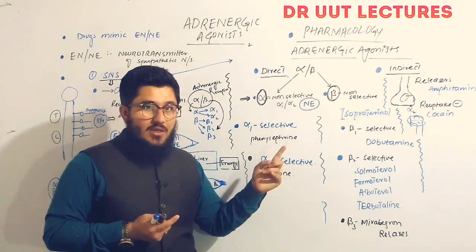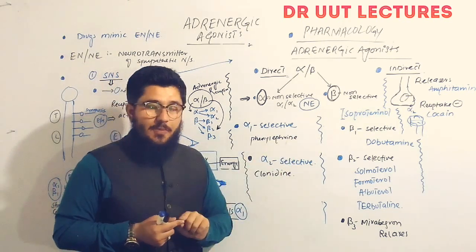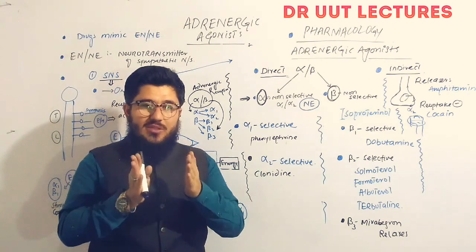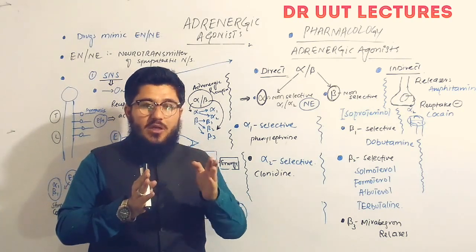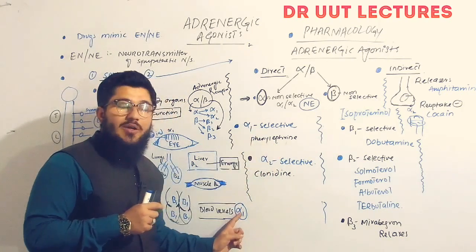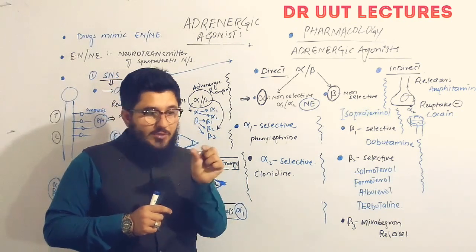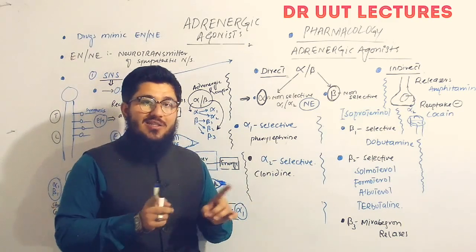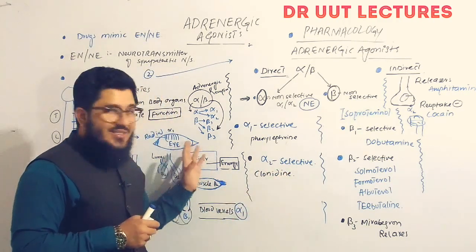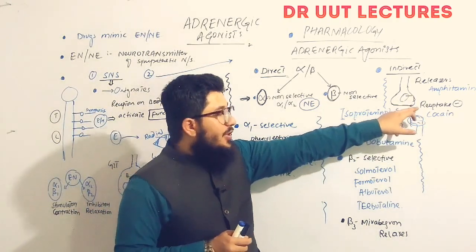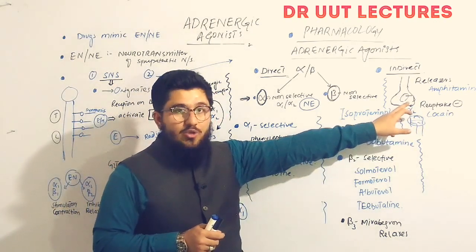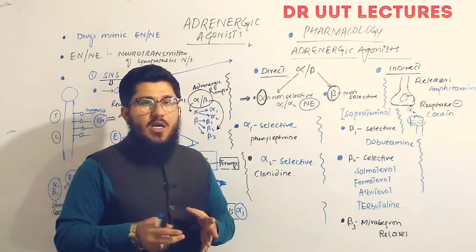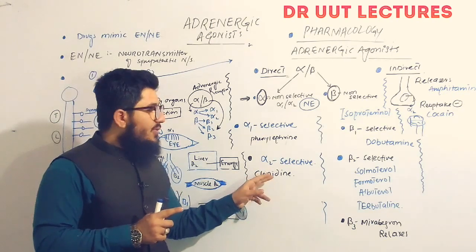Alpha-1 selective drugs — phenylephrine — selectively stimulate the alpha-1 receptor. Phenylephrine is clinically used for nasal congestion. When the nose is congested, there is dilation of the blood vessels. Phenylephrine stimulates alpha-1, causing constriction of those blood vessels, so the congestion is relieved. Like this, phenylephrine is used as a decongestant. Alpha-2 selective drugs, such as clonidine, act on presynaptic alpha-2 receptors and are used for treatment of hypertension, similar to methyldopa.